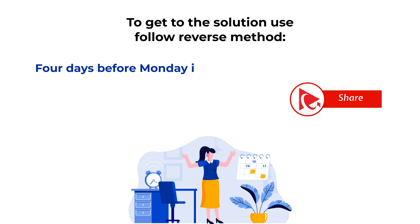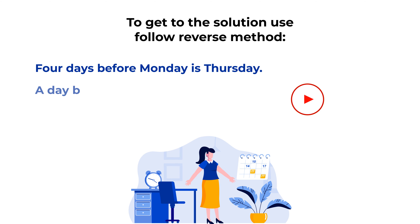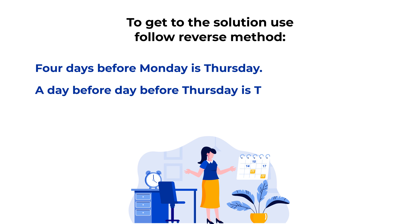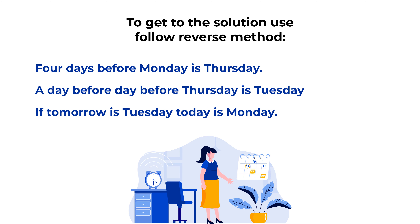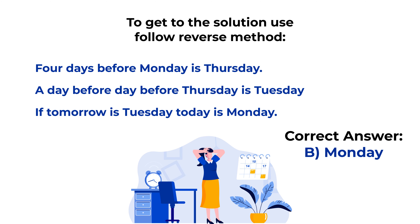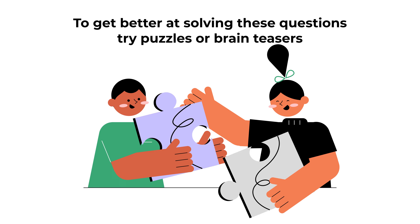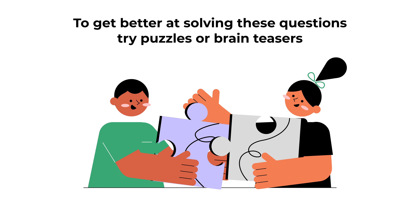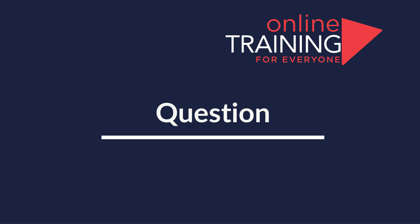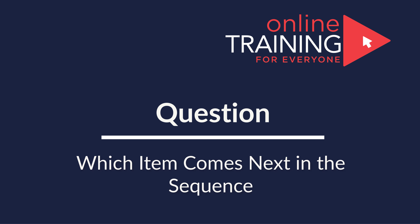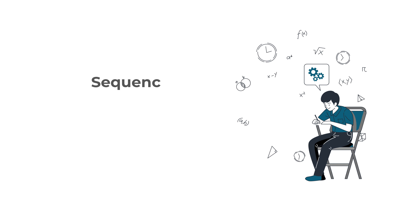Four days before Monday is Thursday, and the day before the day before Thursday is Tuesday. If tomorrow is Tuesday, it means that today is Monday. So the correct answer here is choice B, Monday. Hopefully you've nailed this question and now know how to answer similar puzzles on the test — it is almost guaranteed that you will get questions like this on every test.